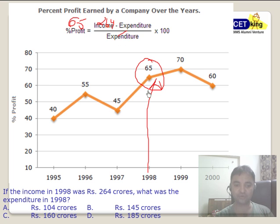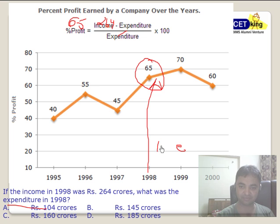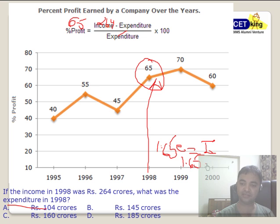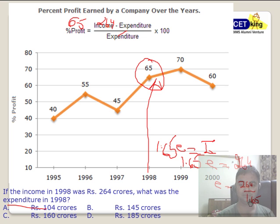So if I put 65 percent profit and income is 264, I can cross-multiply and get my expenditure. Or using a shortcut: if I add profit to my expenditure I should get my income. So 1.65 × expenditure = income = 264. Therefore expenditure E = 264 / 1.65, which gives 160.